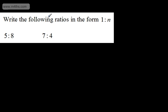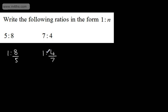We're asked to write the following ratios in the form 1 to n — so I want 1 on the left and n, which is a number, on the right. All I do is divide both parts by 5, so that gives me 1 to 8 over 5, where n equals 8 fifths. For the next one, we would divide both by 7, giving 1 to n with n being 4 over 7. This is a nice way to write a ratio when doing problems with quantities or looking at proportion.